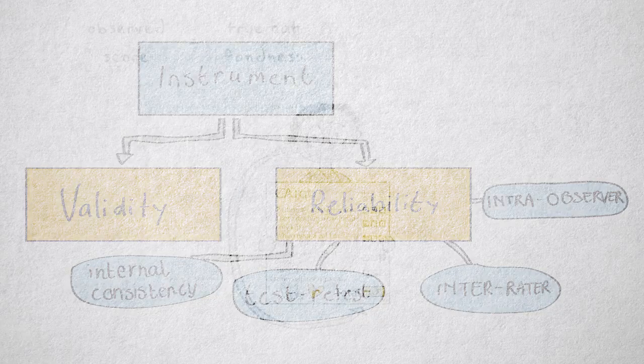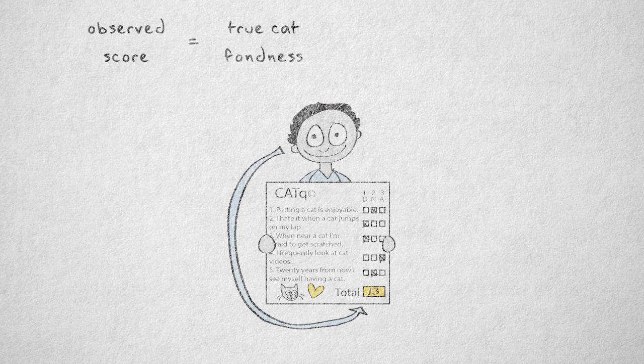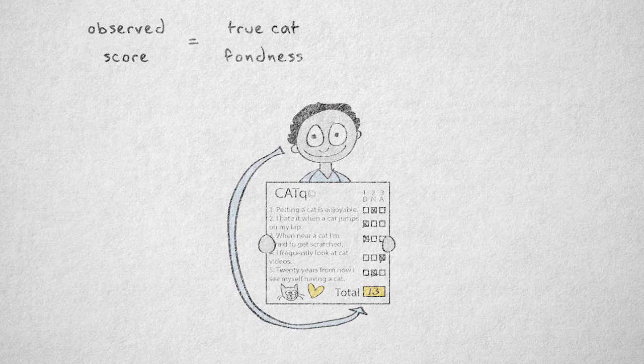If the instrument perfectly reflects someone's true score or true value on the property of interest, then the measurement result, or observed score, should be the same every time.